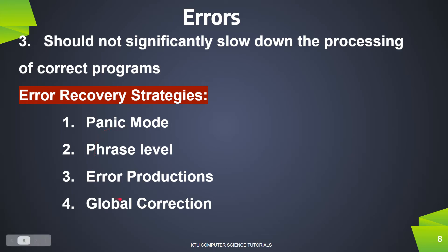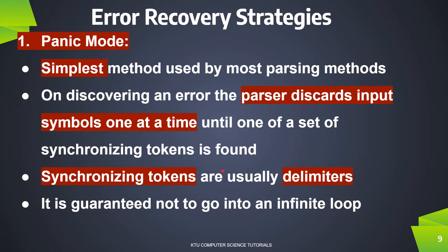We will use four strategies. First is panic mode, second is phrase level, third is error production, and fourth is global correction. Panic mode is a simple method. The parser discards input symbols one at a time until one of a set of synchronizing tokens is found.